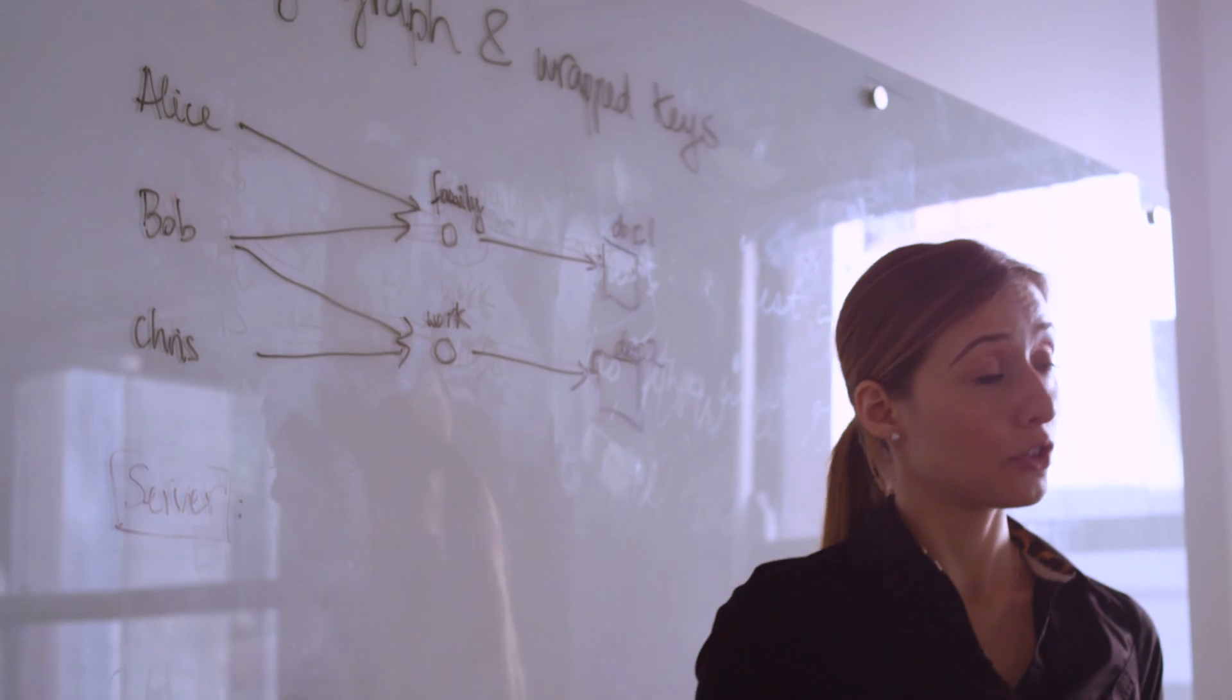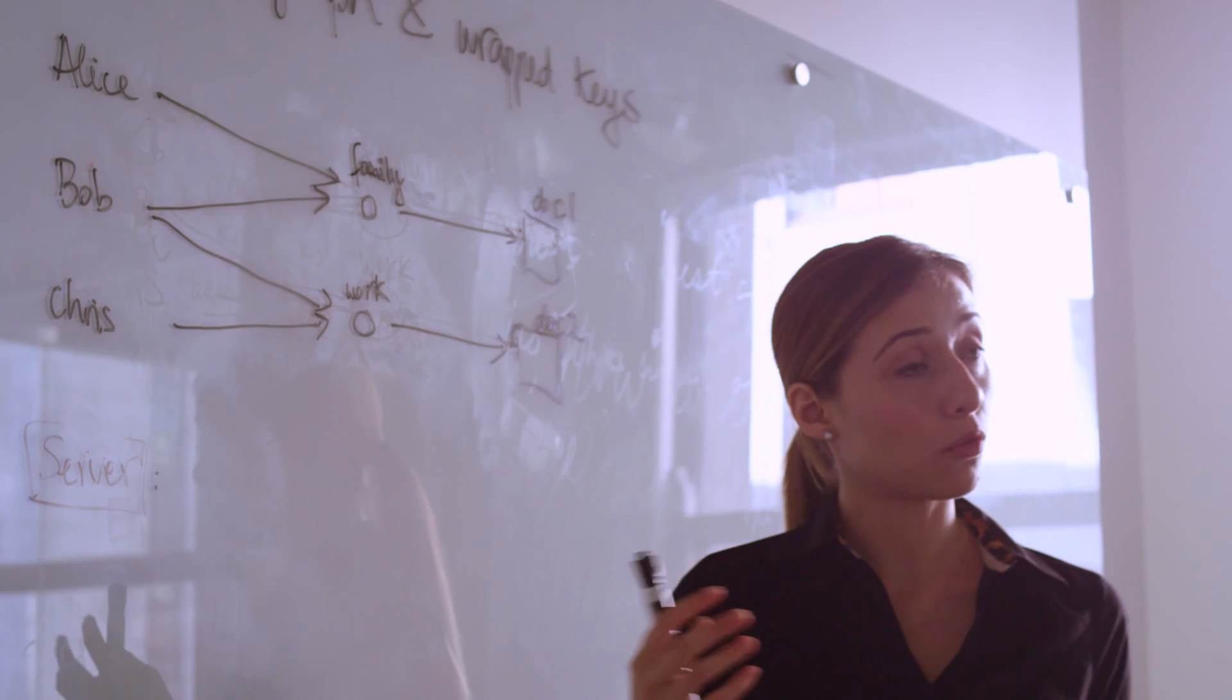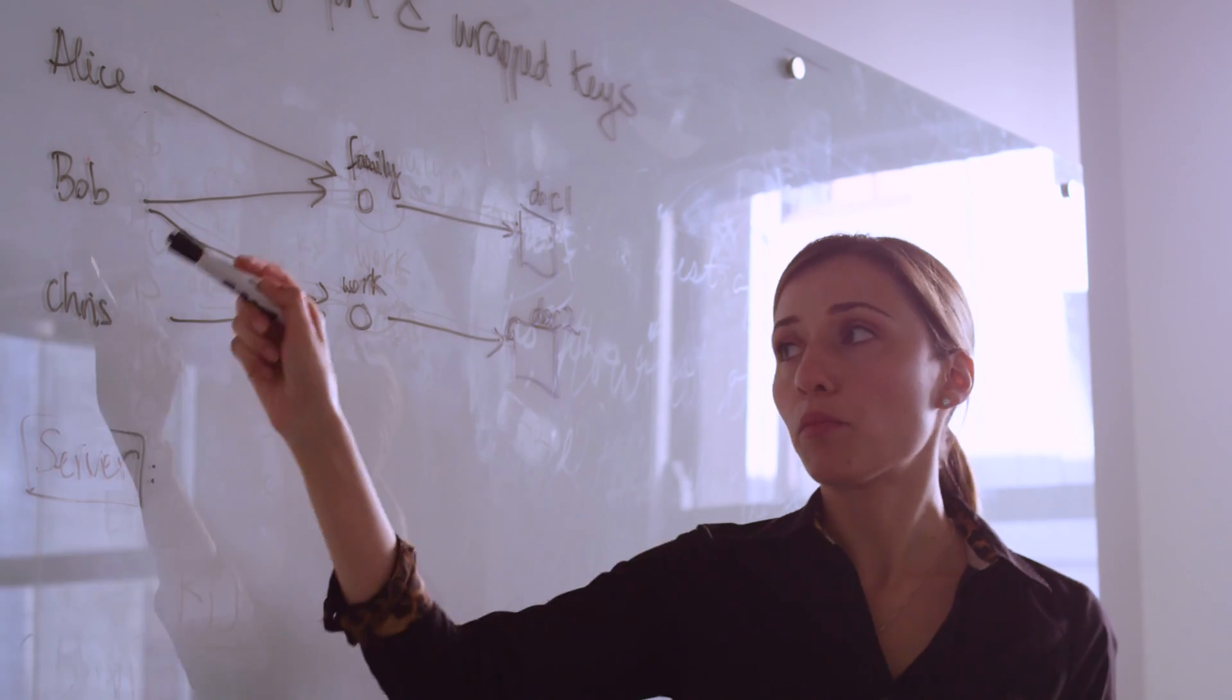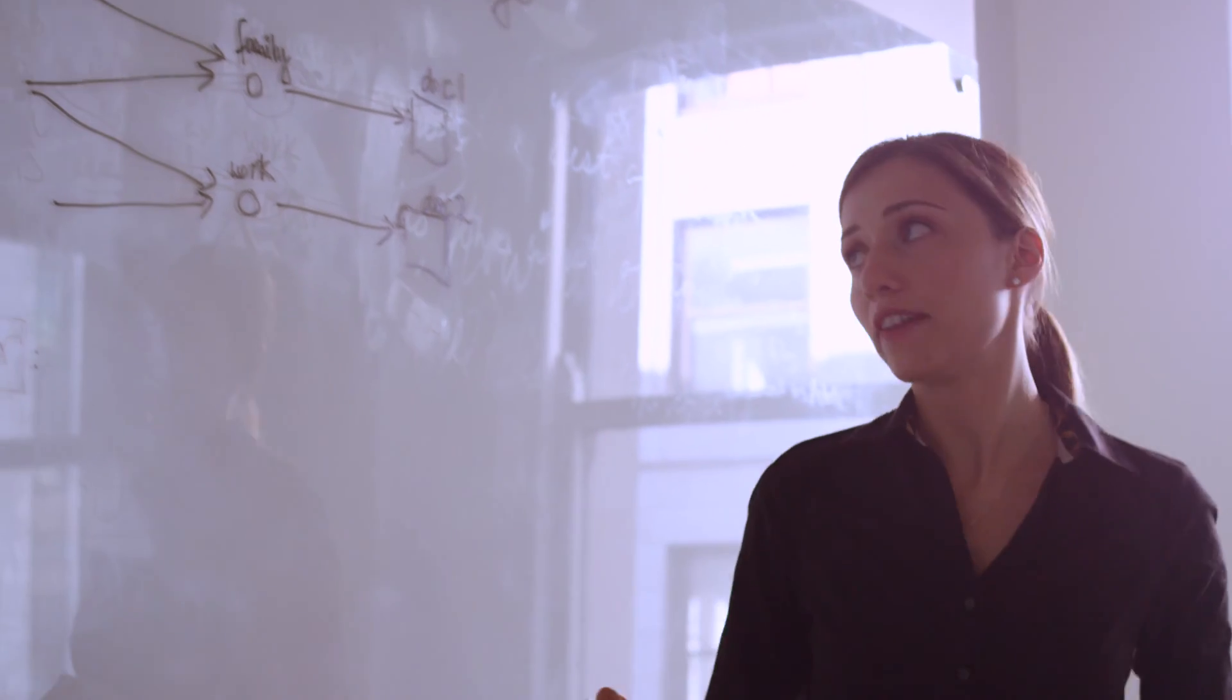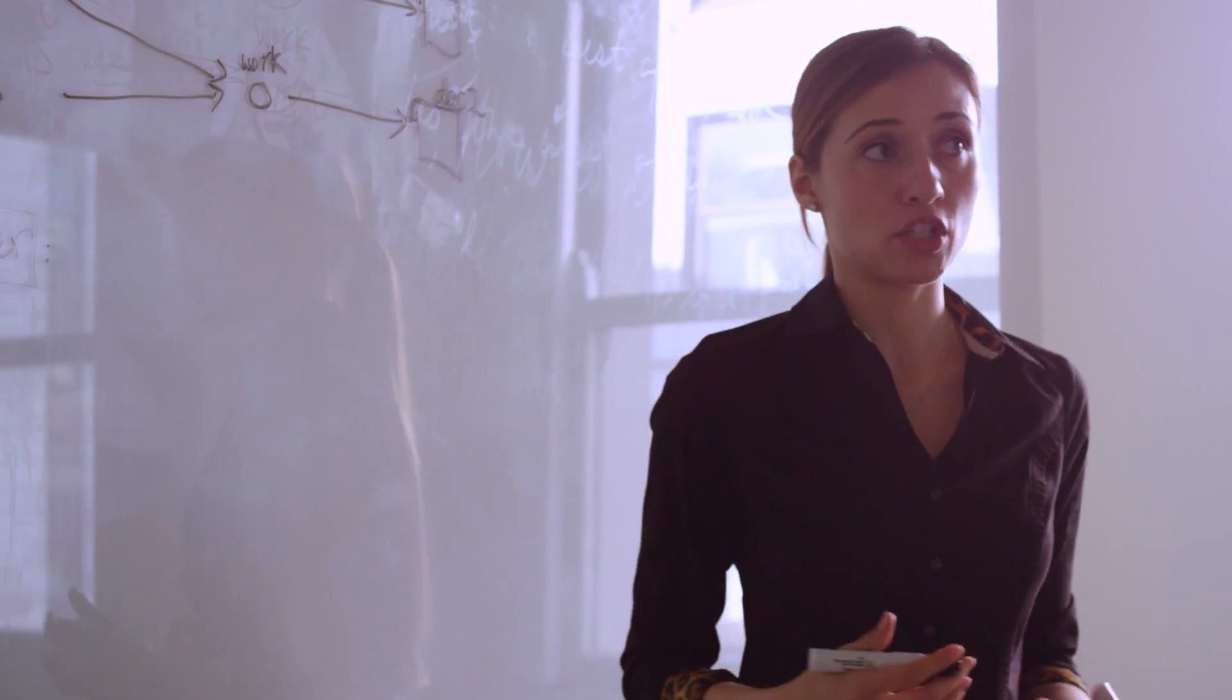Consider that we have three users, Alice, Bob and Chris. Alice and Bob have access to a folder called family that has some document. Then Bob and Chris work together and they have access to the folder work, which contains a document with sensitive information about their company.